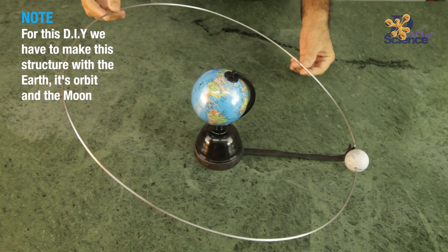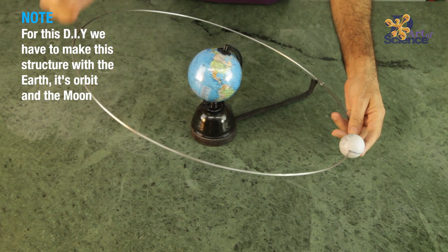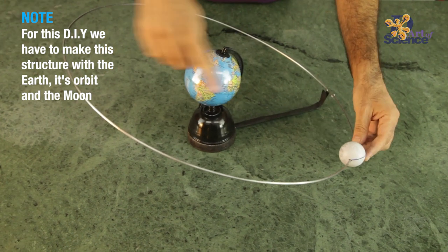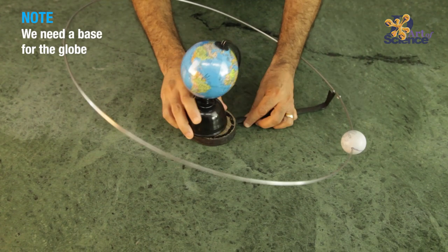So this is what we are going to make, an orbit of the moon around the earth. There are 4 main things in this one: the earth, the ring, the ball that's the moon, and we need a base for the globe.